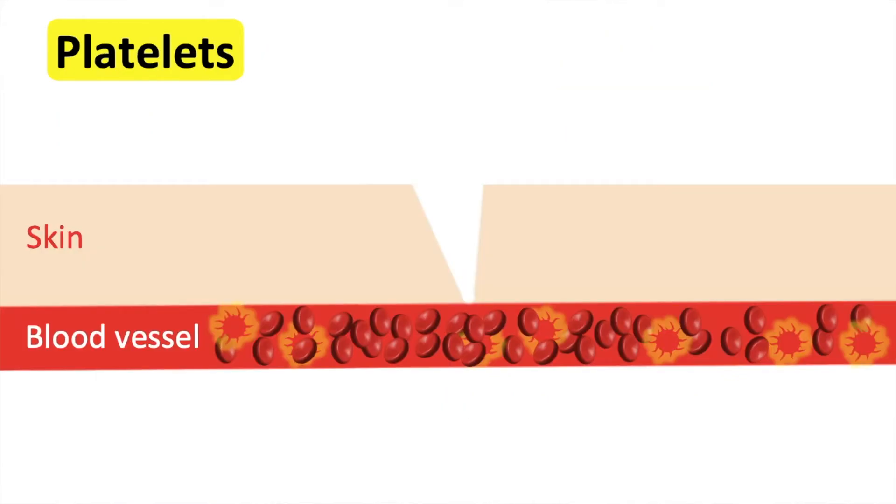At the site of an injury collagen is exposed. This results in the platelets attaching to the area and forming a plug to avoid blood loss.